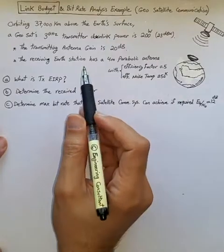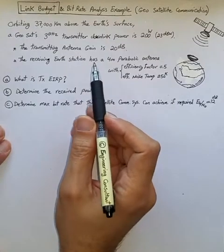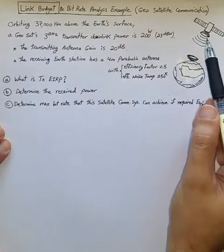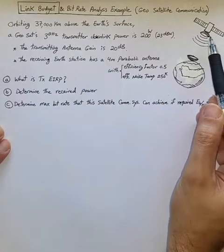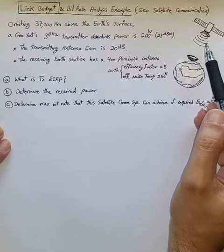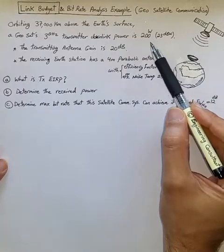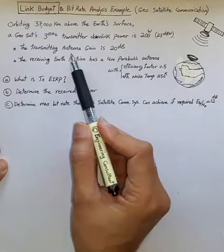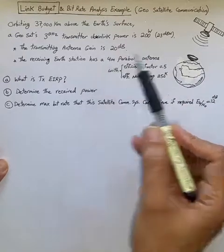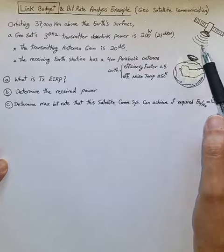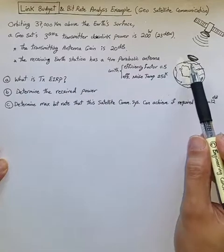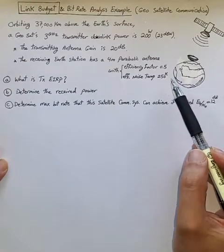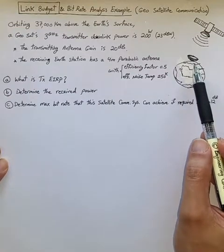Link budget and bitrate analysis example for geosatellite communication. The satellite orbits 37,000 km above the Earth's surface. Its 3 GHz transmitter downlink power is 200 Watts, which means 23 dB Watt transmit power. The transmitter antenna gain is assumed to be 20 dB. The receiving Earth station has a 4-meter parabolic antenna with efficiency factor 0.5 and effective noise temperature 250 Kelvin.